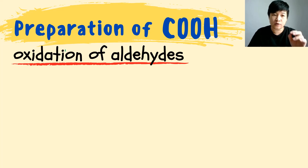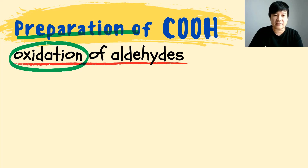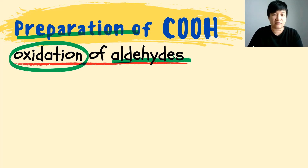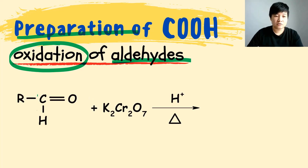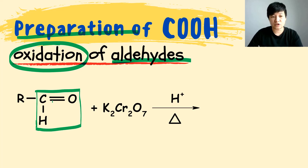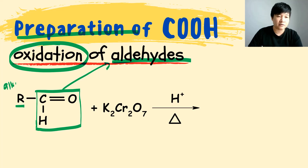Let's move to the second and last method to prepare carboxylic acid, which is the oxidation of aldehyde. Again, it's something you have learned in the topic of aldehyde. Looking at the aldehyde structure, you have C double bond O attached to the H, where the position of C double bond O is on the last carbon. That is the aldehyde, and as always, that is your alkyl group that will most likely have no changes.